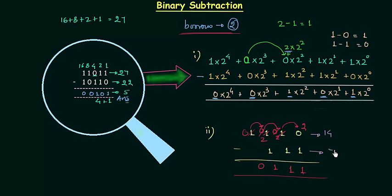1111 is 7 in decimal. And 14 minus 7 is 7, so we have 7 as the answer — our answer is correct.